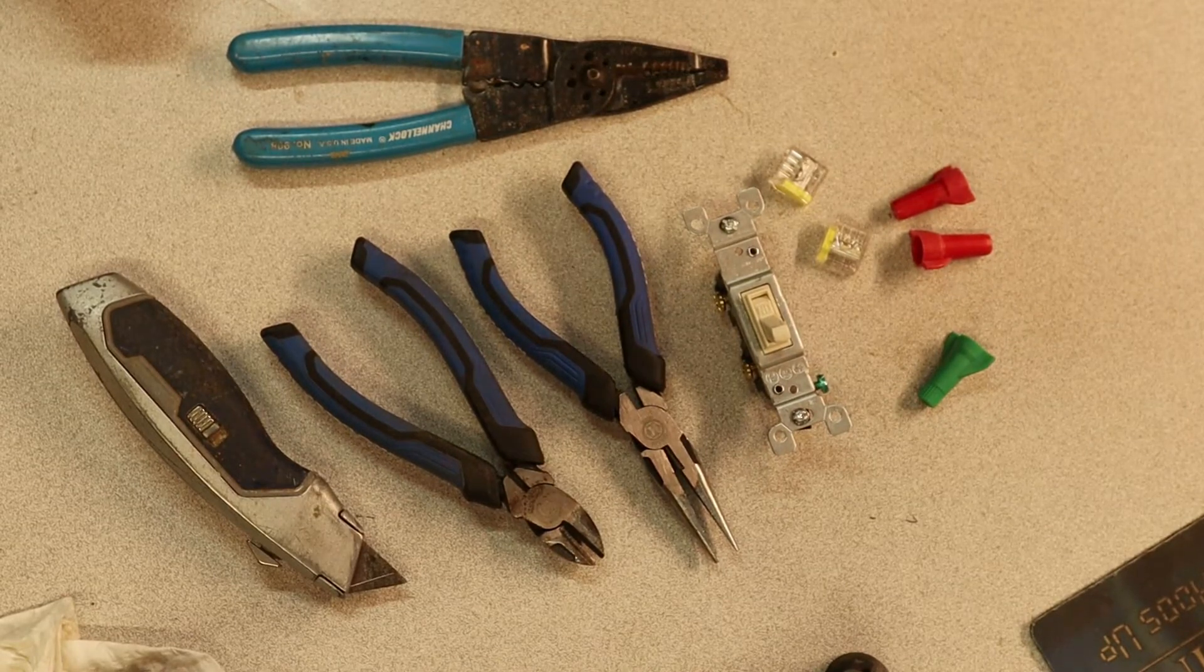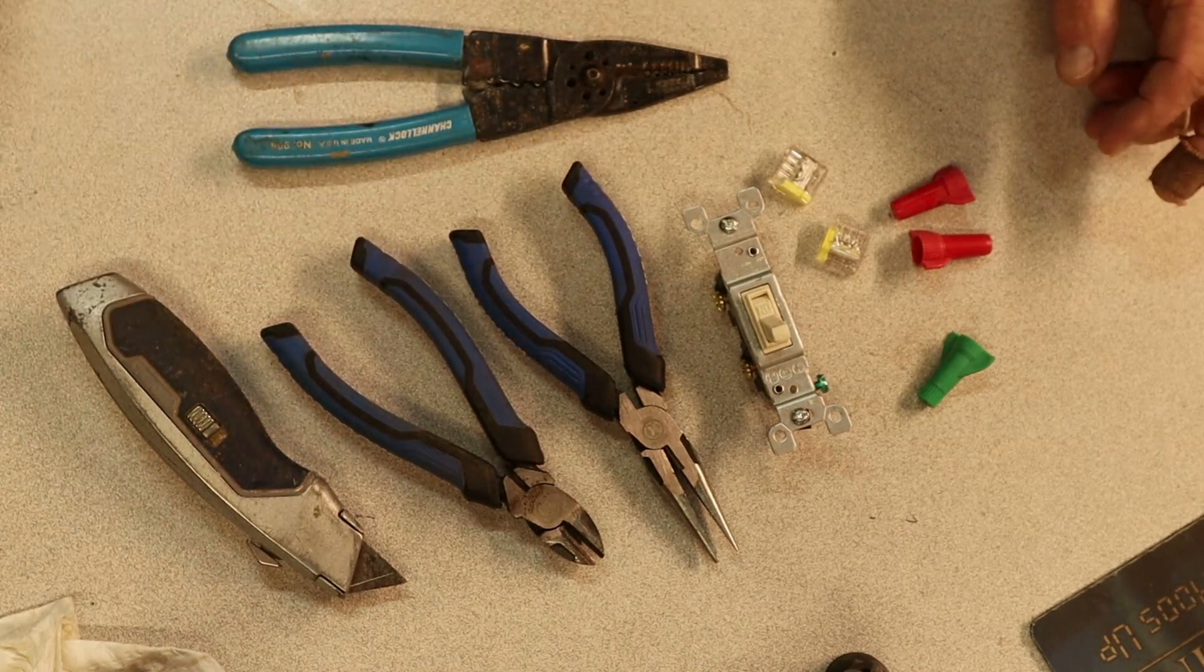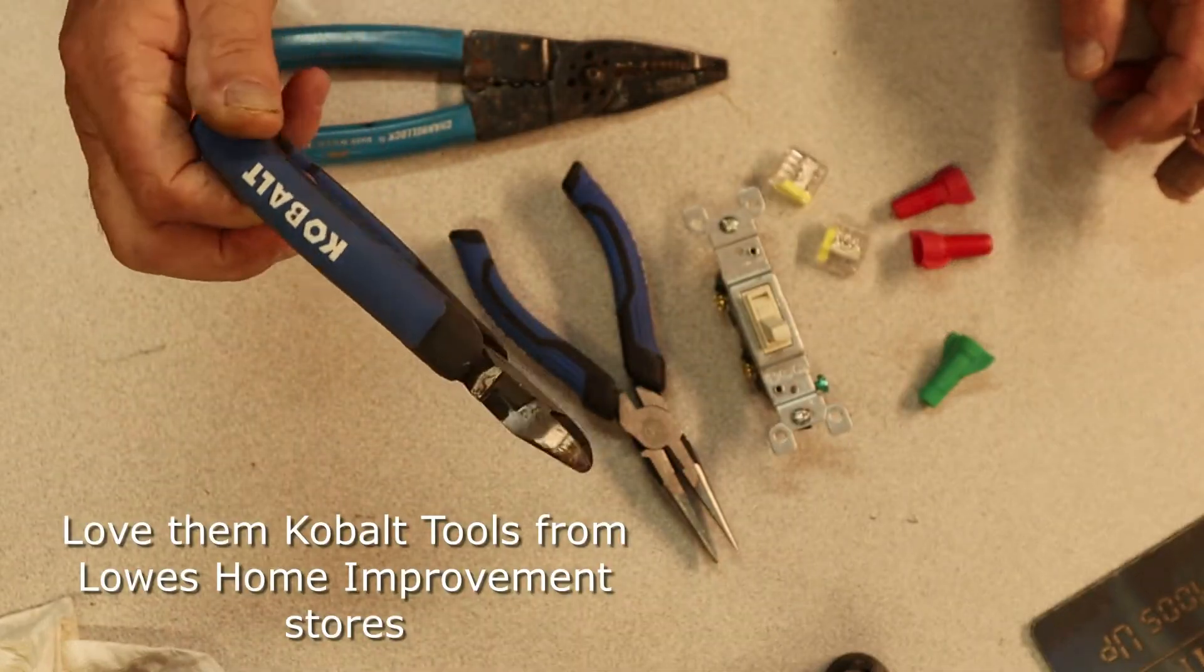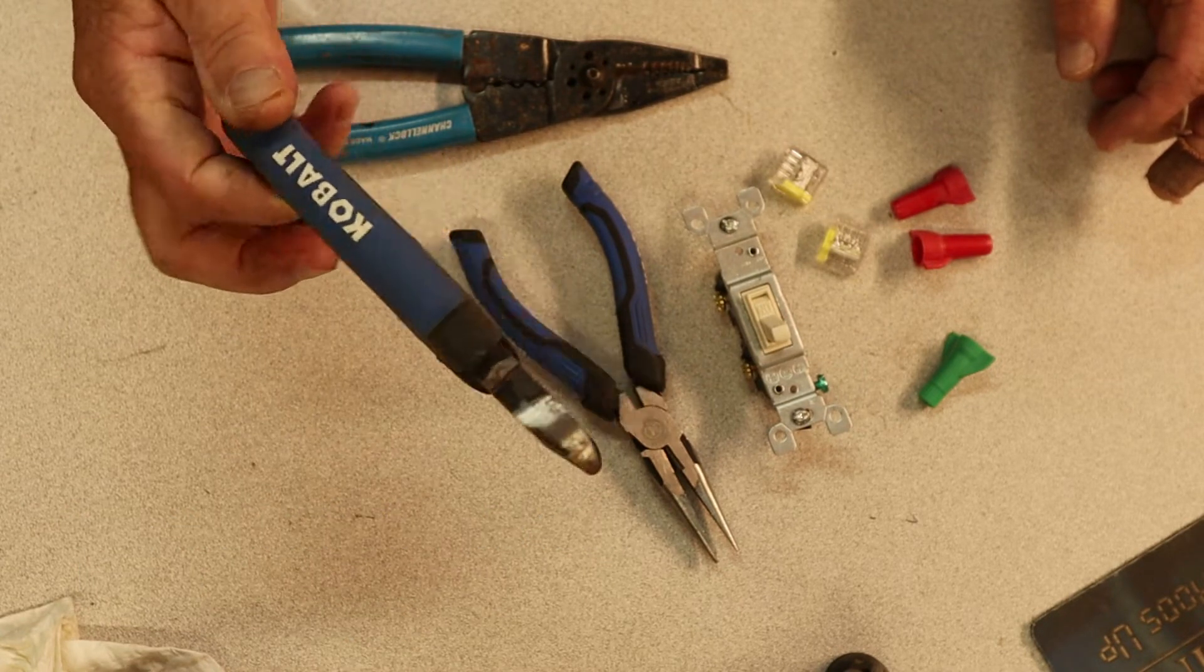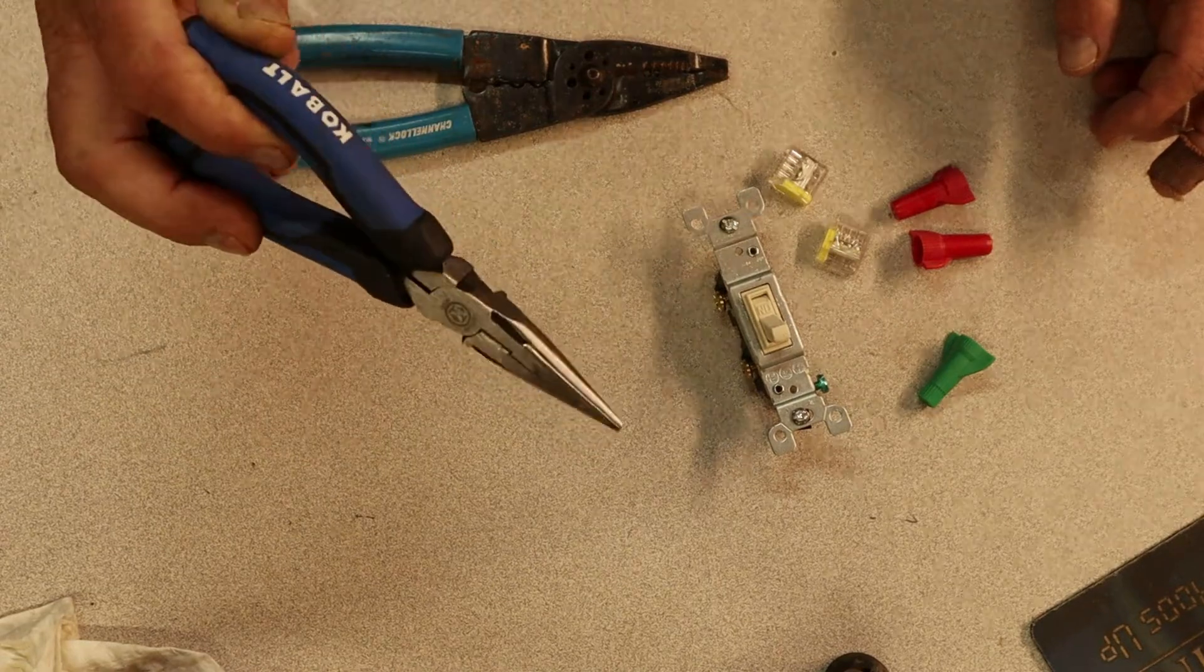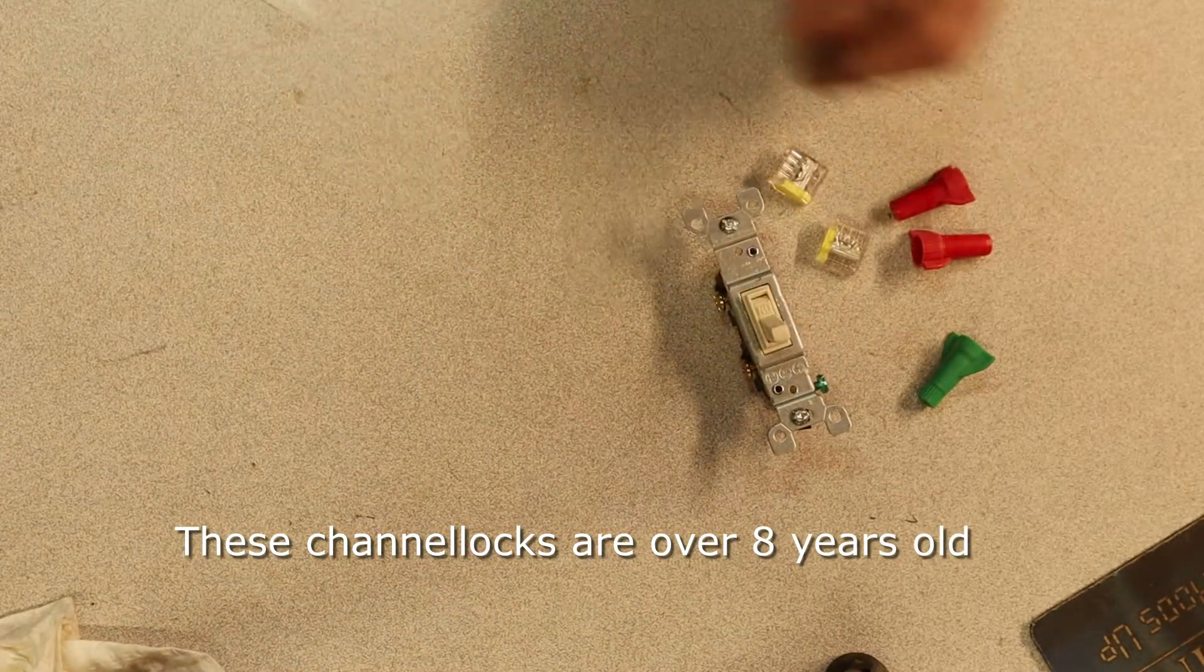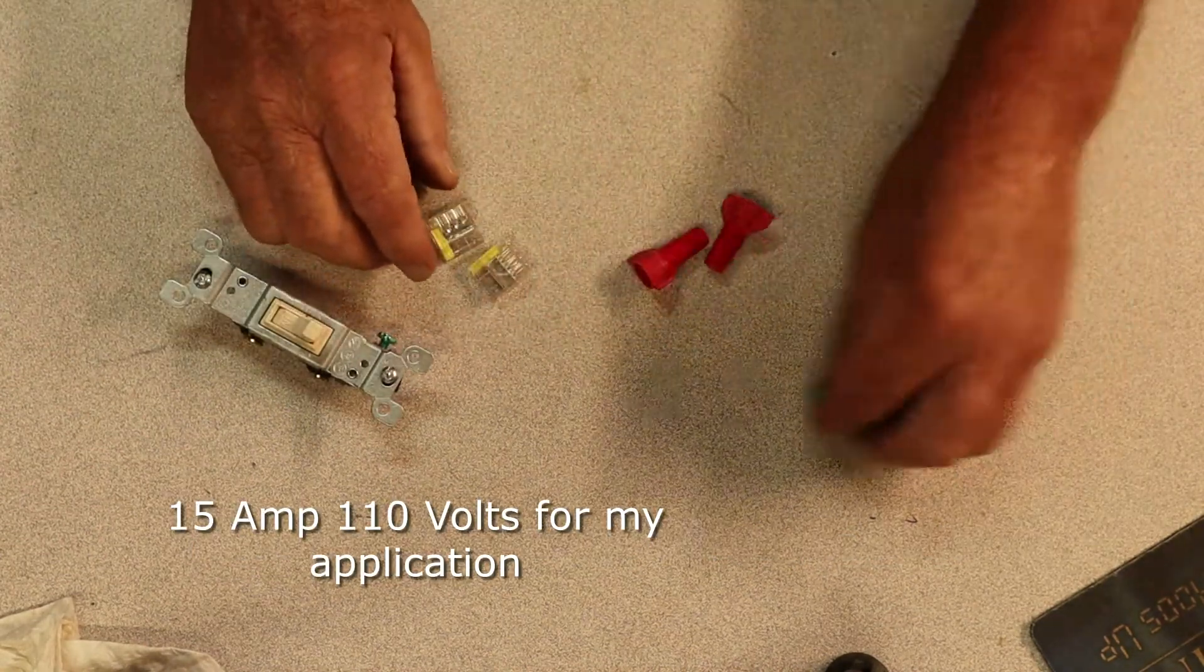All right, to get us started, these are a few of the tools that you're going to possibly need to do this installation. Phillips head screwdriver, your choice of what brand. Utility knife. A pair of pliers, maybe something like this. And I like the cobalt. I bought a set of these here about eight months ago, different types, different style pliers. And actually, they've been really good. So, kudos to the cobalt.